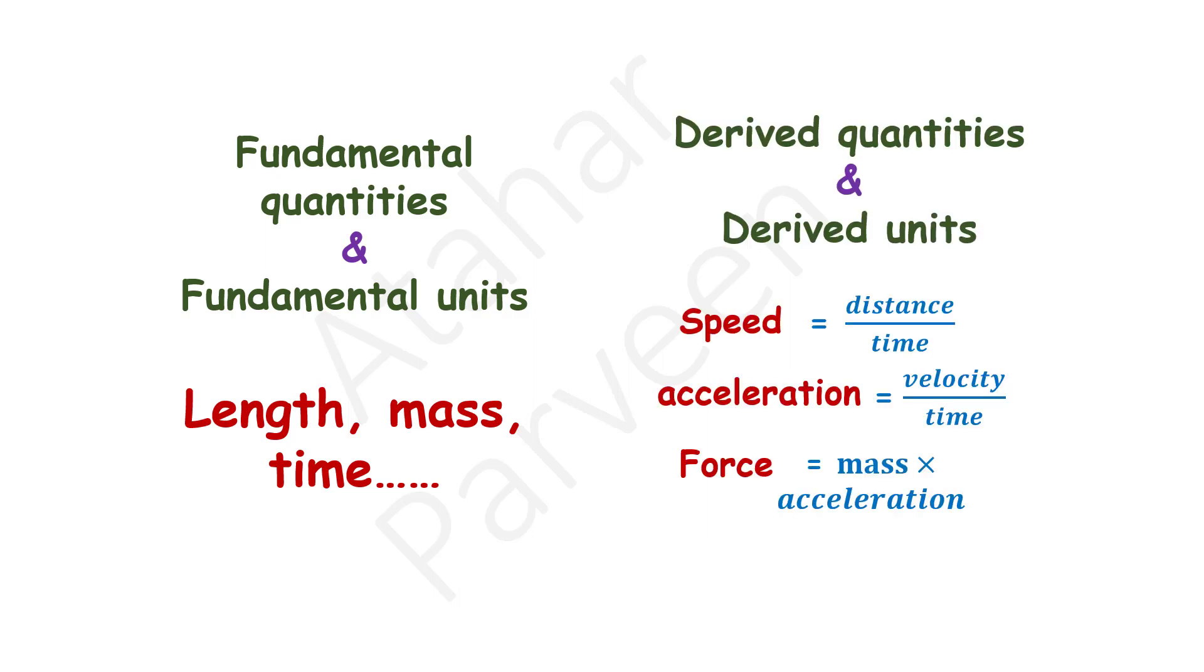Those quantities which can be expressed in terms of these fundamental quantities are known as derived quantities and their units are known as derived units. For example, speed, acceleration and force. Speed is equal to distance upon time, acceleration is the ratio of velocity and time, and force is the product of mass and acceleration.